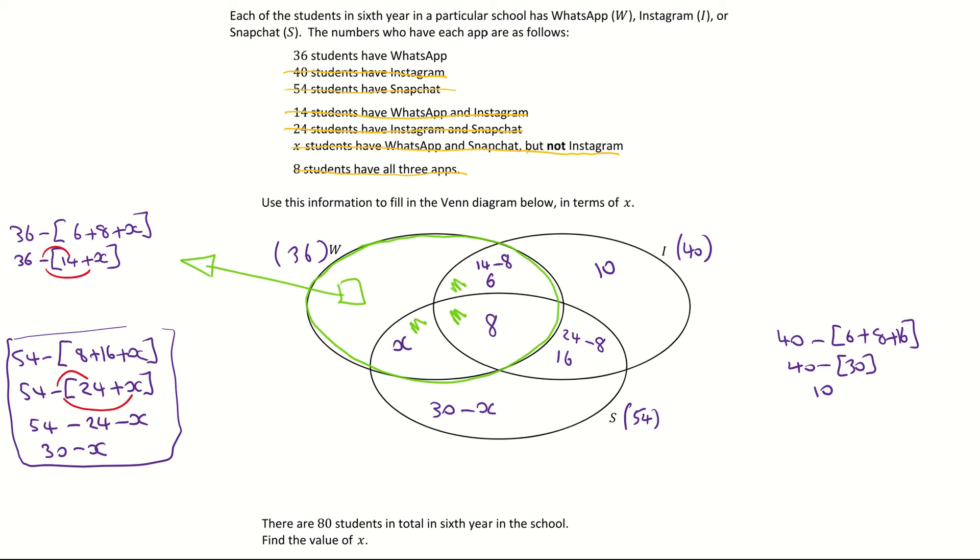So I'm going to go 36 subtract 6 plus 8 plus x. Add the 6 and the 8 you get 14 plus x. I need to remove the brackets. Again you can do these different ways. If you don't use brackets just make sure you put minuses in each time. That's going to give me 36 minus 14 minus x which is 22 minus x. So I'm going to fill that into my Venn diagram, and that's going to be 22 minus x. And that's the first part of this question done. In terms of x basically just means you have an x in it.